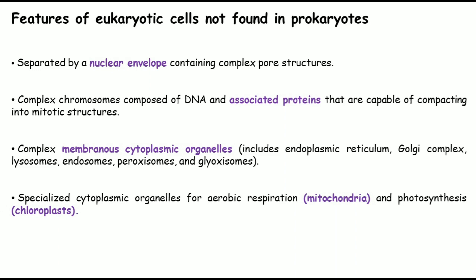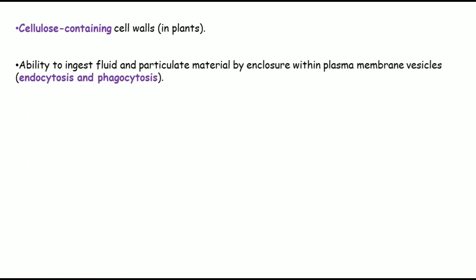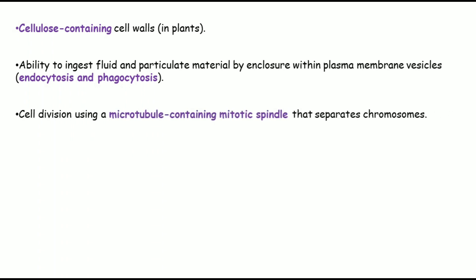Specialized organelles for aerobic respiration, such as mitochondria, are present in eukaryotic cells, and plant cells also contain chloroplasts for photosynthesis. The complex cytoskeleton system with microfilaments, intermediate filaments, and microtubules is eukaryote-specific. Plant cell walls contain cellulose, whereas prokaryotic cell walls contain different types of proteins. Endocytosis and phagocytosis — the ability to ingest fluid or particulate material — are efficient mechanisms in eukaryotes but absent in prokaryotes. The microtubule-containing mitotic spindle for cell division is also absent in prokaryotes.